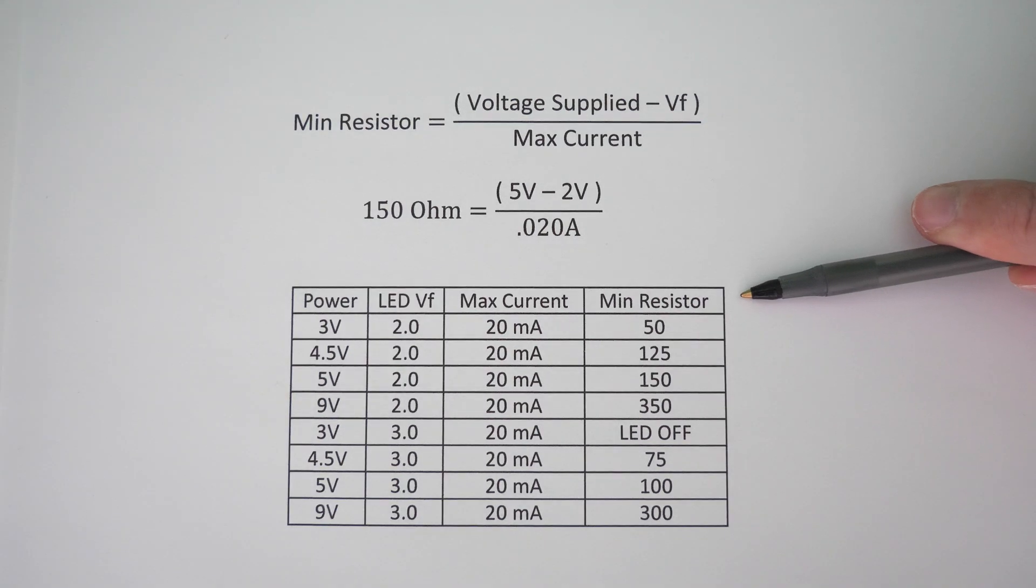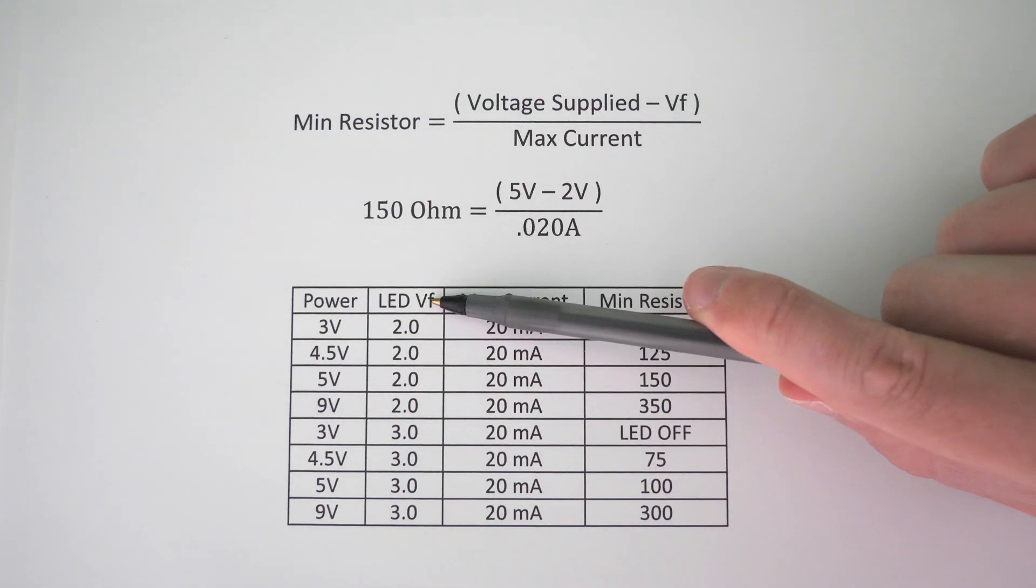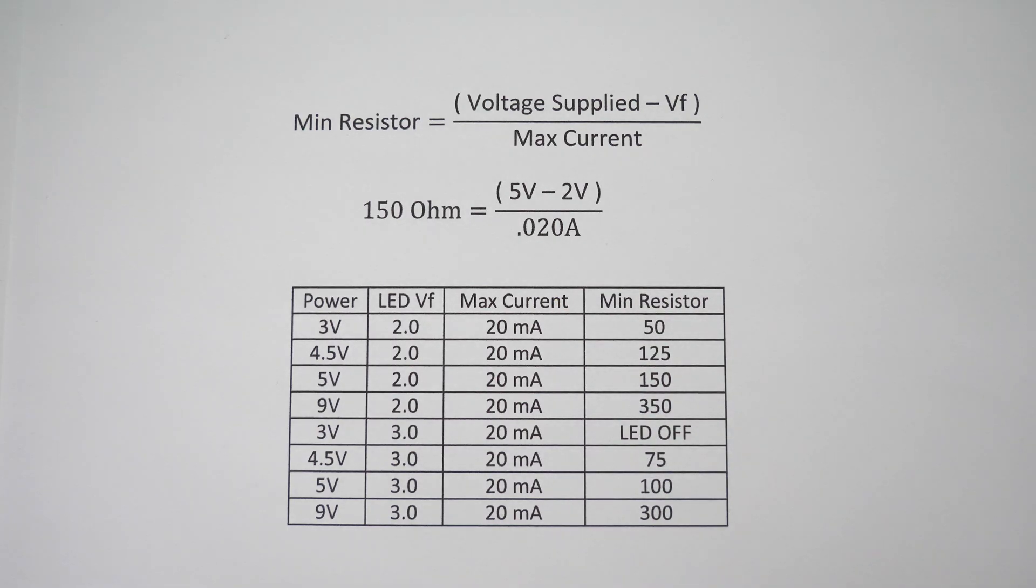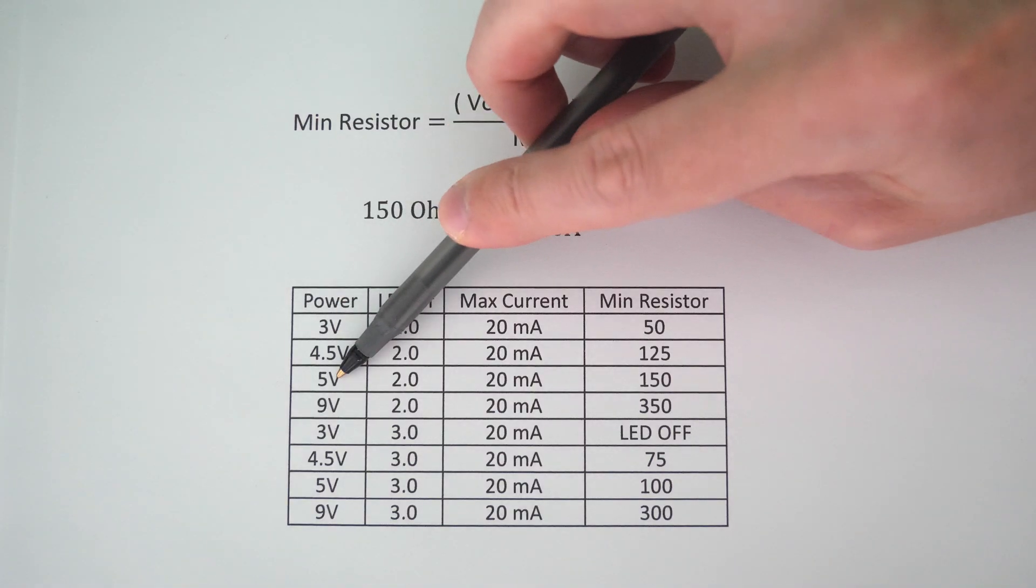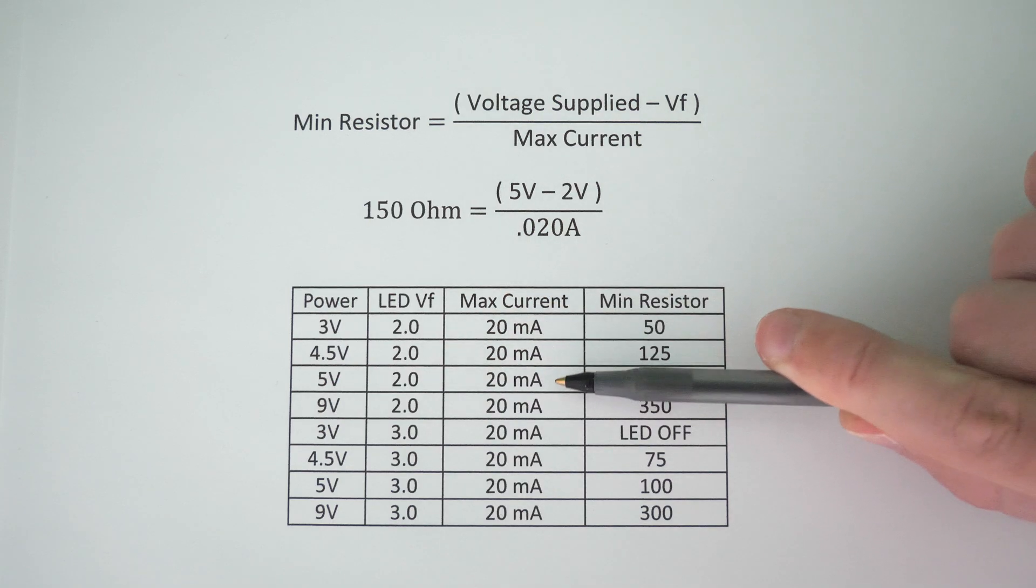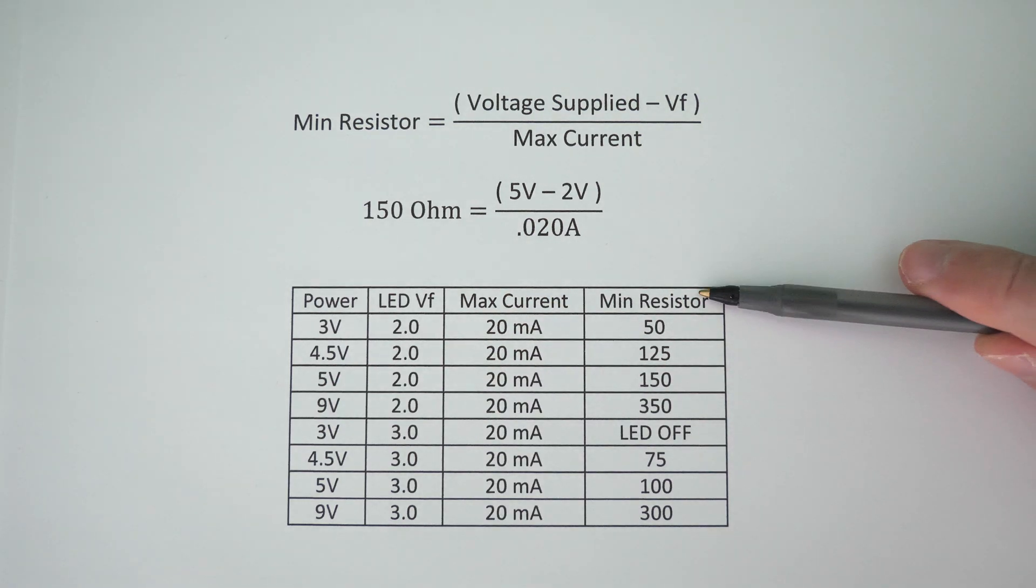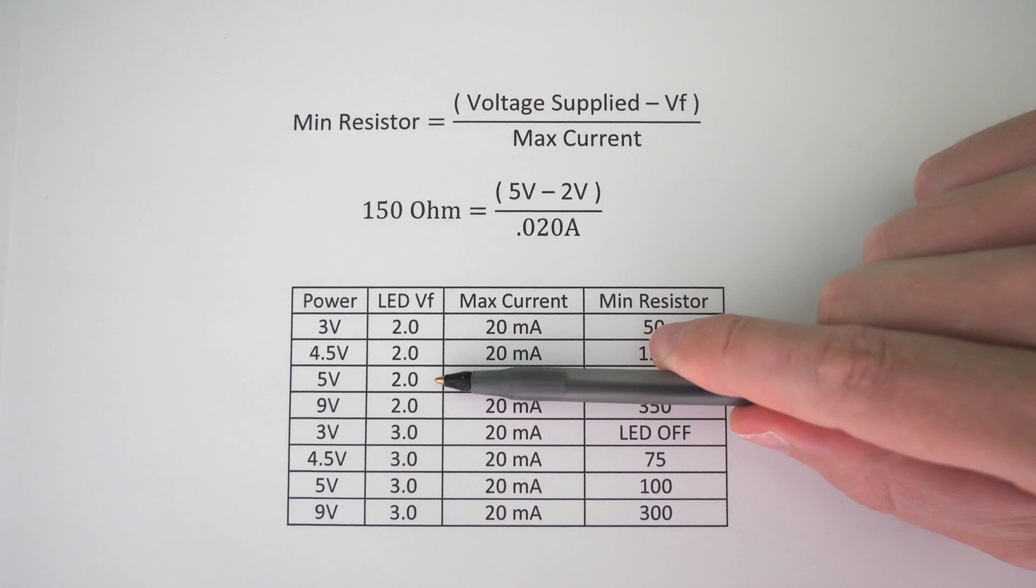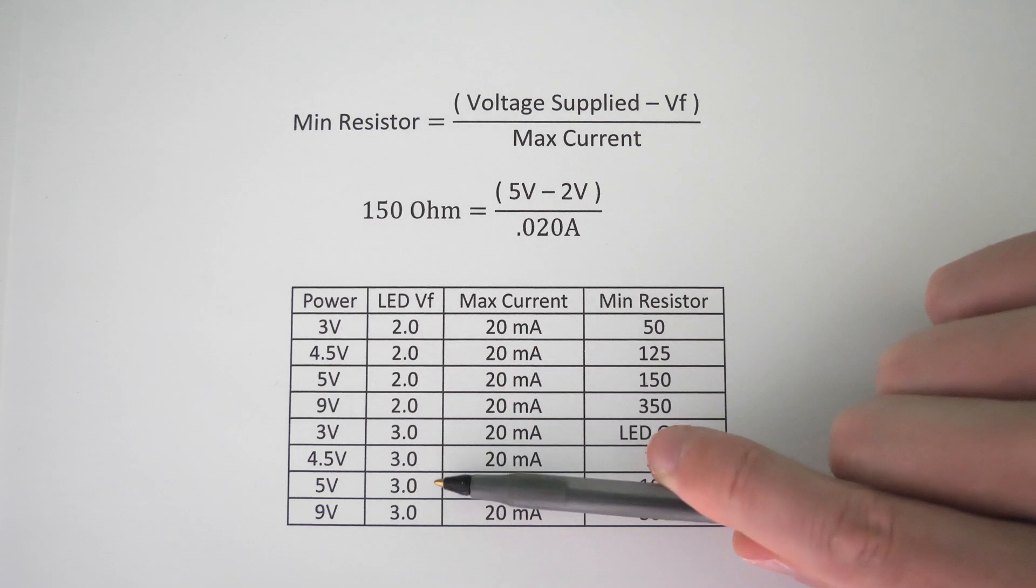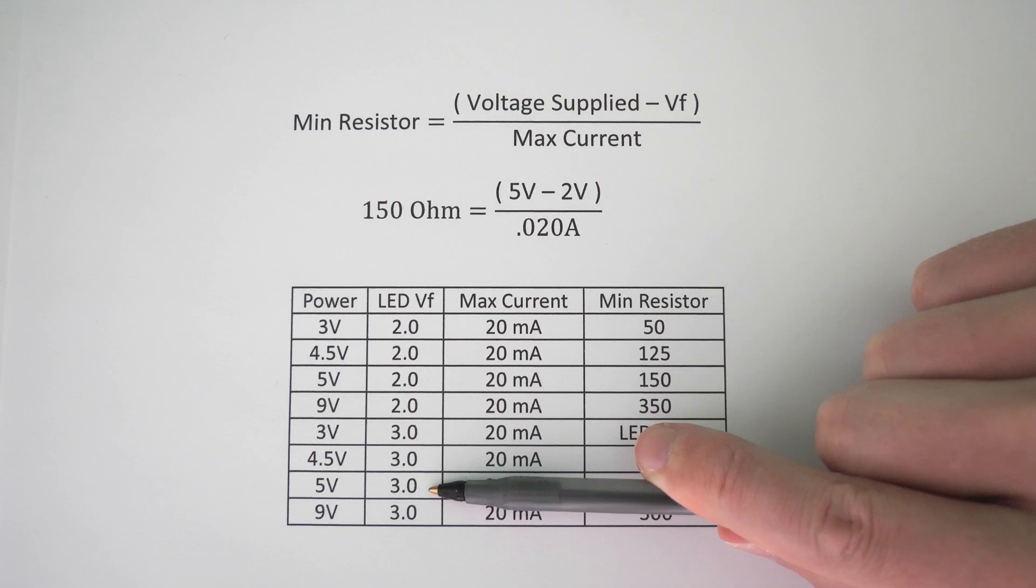This table right here shows some examples of the minimum resistor values depending on the supply voltage, the forward voltage drop across the different LEDs, and the max current rating of the LED. You can see that our example values here are in the table. So if our supply voltage is 5 volts, and the forward voltage drop across the LED is 2 volts, and our max current rating is 20 milliamps, then our minimum resistor value is 150 ohms. A forward voltage drop of 2 volts is going to be similar to a yellow LED.